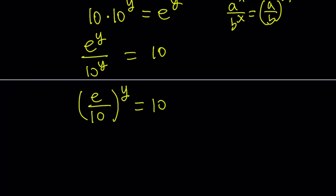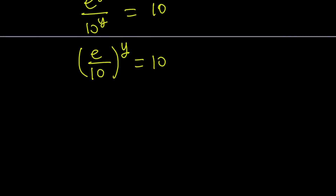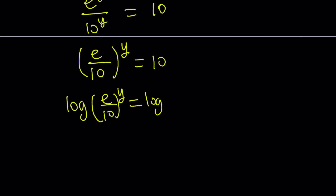So now it's nice because we have a single variable and we can bring it down. You can log both sides since we have a 10 on the right-hand side — that makes sense. Log of e over 10 to the power y equals log 10, which is 1.